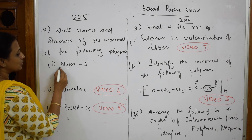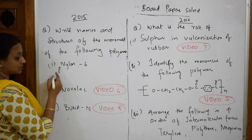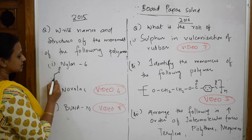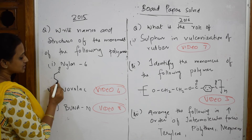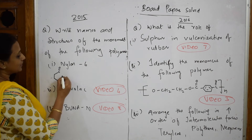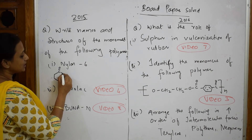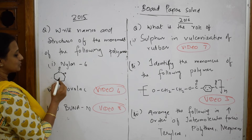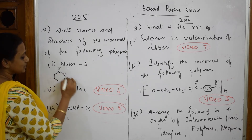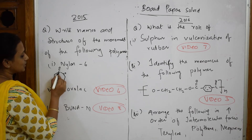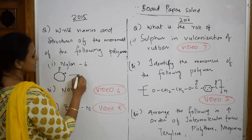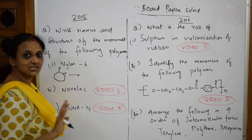So what is caprolactam? First you start with C double bond O, then from here: first carbon, second, third, fourth, fifth, and sixth. Then join this to N-H. Let's count — it's drawn like this, please draw it carefully. One, two, three, four, five, and six. That is the reason we call it nylon 6 — six carbon atoms.